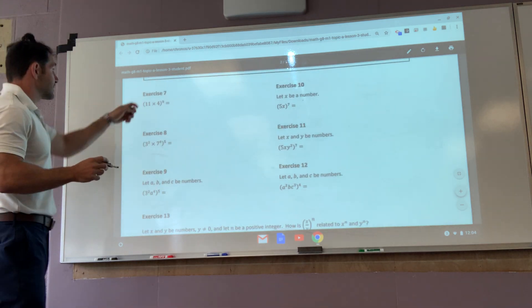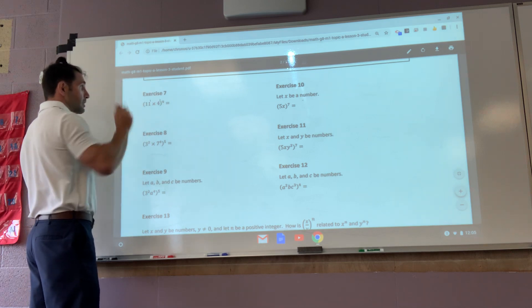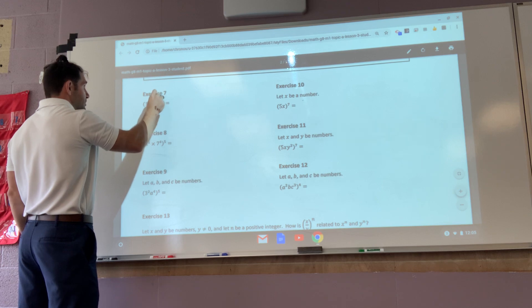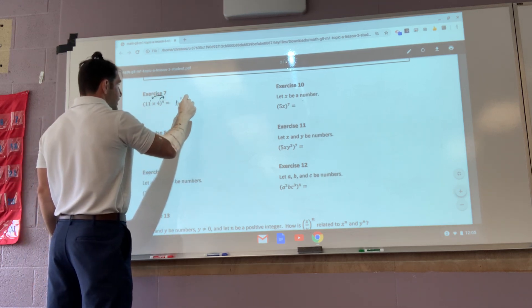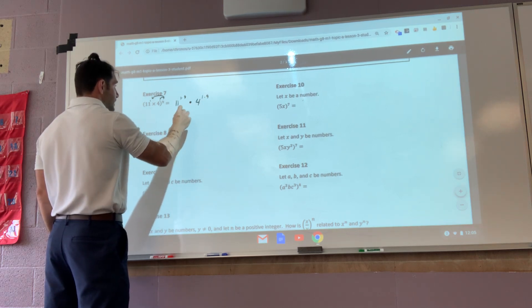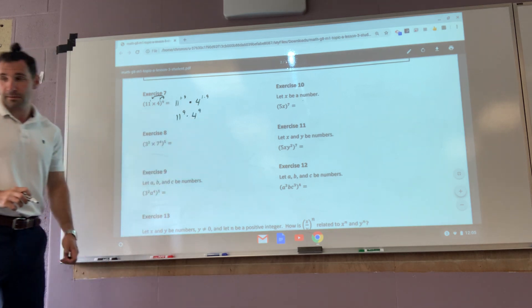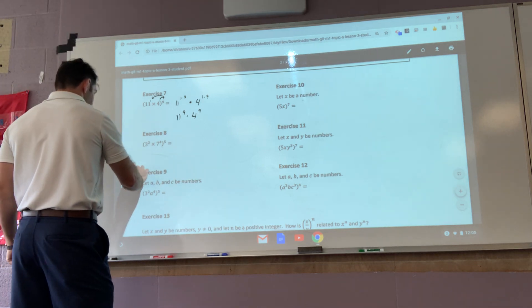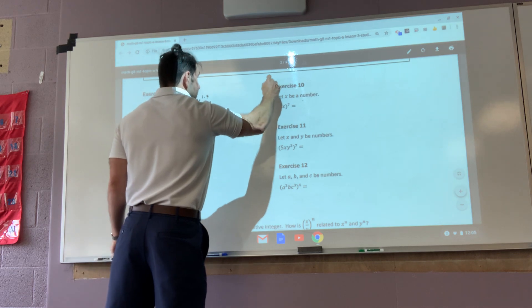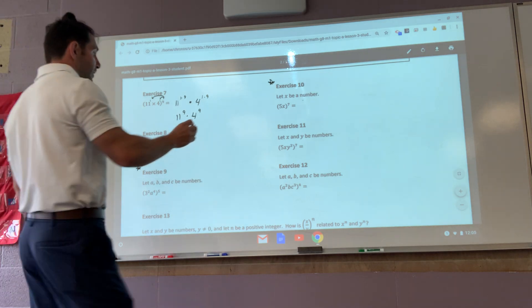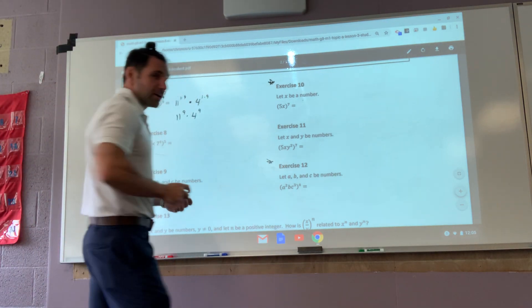So first and foremost, eleven times four. This has an exponent. This has an exponent. So I'm going to take nine times the exponents. That gives me eleven, one times nine, multiplied by four, one times nine, which is eleven to the ninth times four to the ninth. Okay? I'd like you to do exercise nine and exercise ten. Go. Oh, and exercise twelve. I lied. Come back. Exercise twelve. Do exercise twelve too. Yay!